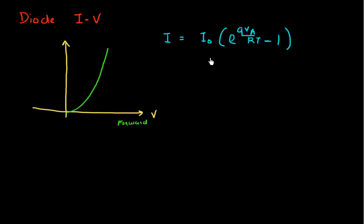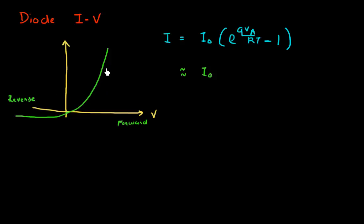And when I apply a negative voltage, I would expect this current to essentially saturate to the reverse bias current. So I would expect this current to essentially saturate over here. This is what I call my reverse bias regime, and this non-linearity in my IV relationship is what makes this diode a very interesting device.